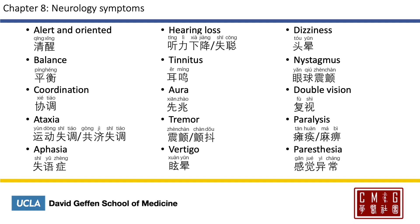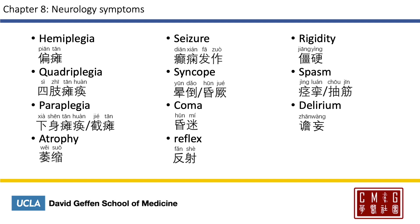Paresthesia is 感觉异常. Hemiplegia is 偏瘫. Quadriplegia is 四肢瘫痪 or 全瘫. Paraplegia is 下身瘫痪 or 截瘫, 截 meaning to cut or a segment. Atrophy is 萎缩. Seizure is 癫痫发作. Syncope is 晕倒 or 昏厥.